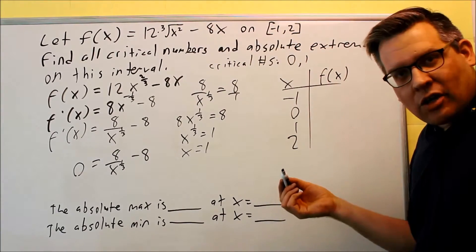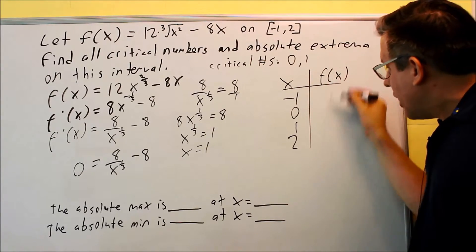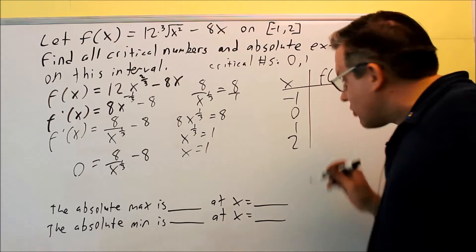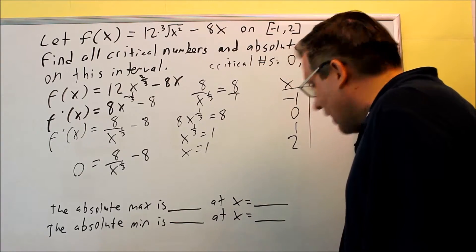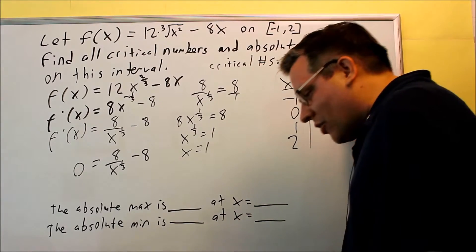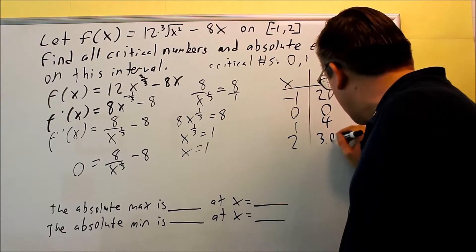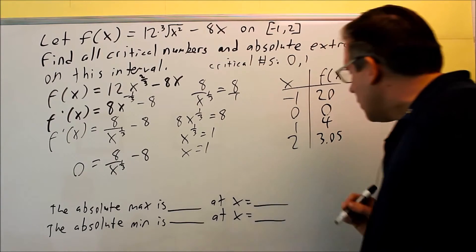You can use a graphing calculator if you want or do them by hand. I'll just go ahead and give you the values for each of those. So at negative 1, you'll get 20, then 0, 4, and then 3.05 as a decimal.